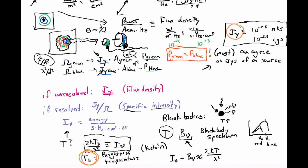The rest of these units — the power, the power per area, the power per hertz — are all units you will use as you translate the intensity or flux density of sources on the sky to the electrical signals that come out the back end of these cables.